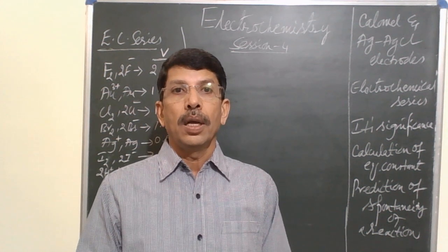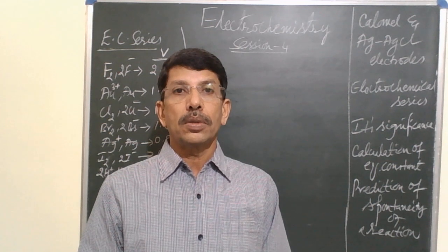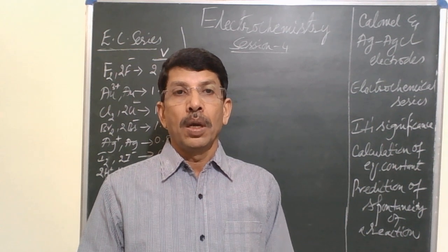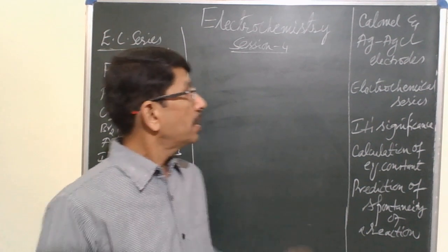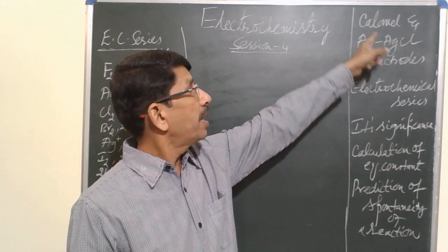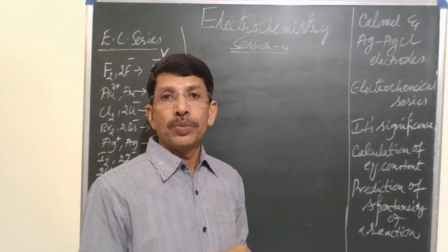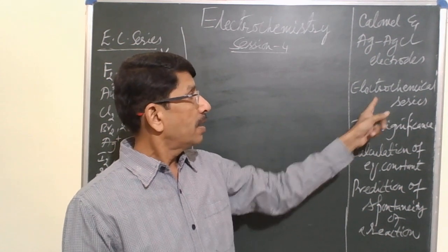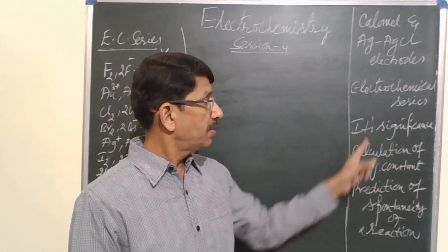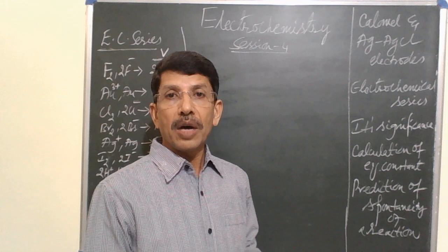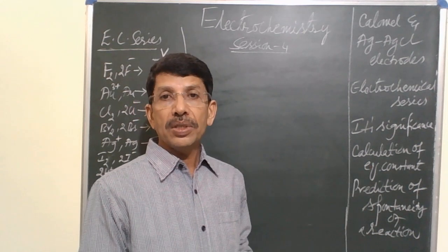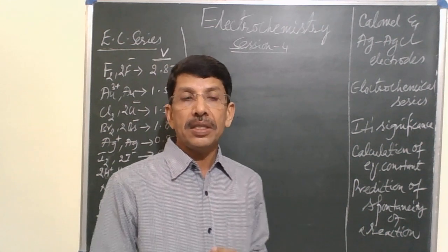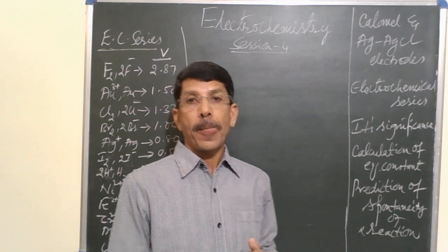Good morning students. Welcome to the fourth session on electrochemistry. In today's session we will be discussing the construction and working of calomel and silver-silver chloride electrodes, which are considered secondary reference electrodes. Then we will discuss the electrochemical series and its significance, and also how to calculate the equilibrium constant for a cell reaction and how to predict the spontaneity of a redox reaction.